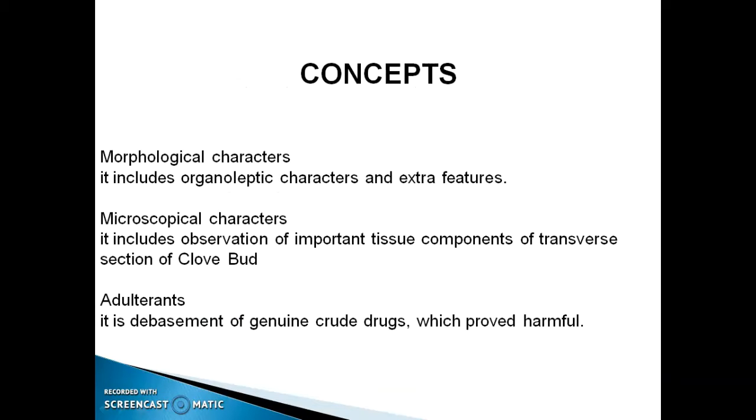Morphological characters include organolactic characters and extra features of the drug. Microscopical characters include observation of important tissue components of transverse section of clove bud and adulterants, which is a debasement of genuine crude drugs which proved harmful.